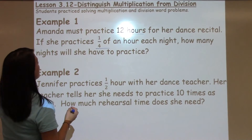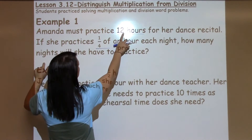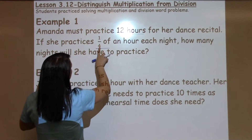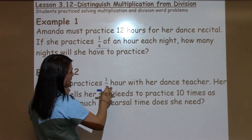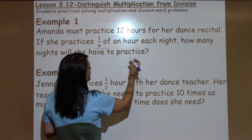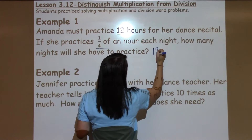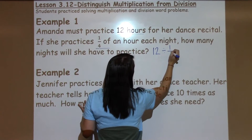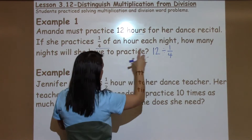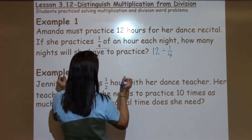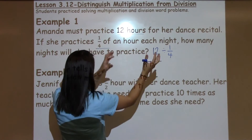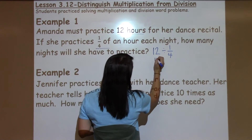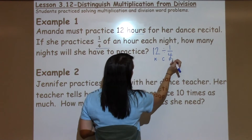So how many nights will I have to practice? I'm going to take my hours and chop them up into one-fourth chunks. If I take 12 divided by one-fourth — division, breaking those into different chunks each night — I'm going to keep, change, flip.